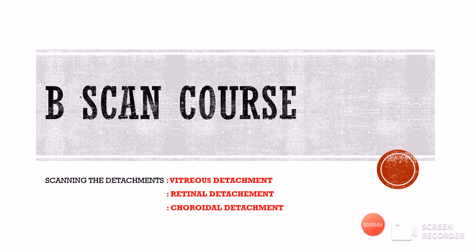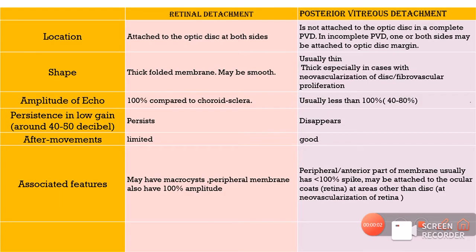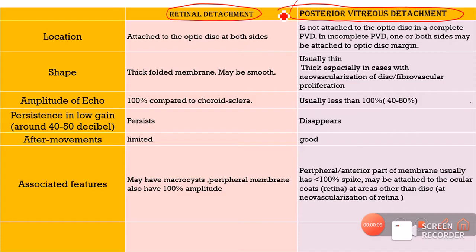Hello and welcome to Insight Ophthalmology. This is Dr. Amrit and you are watching the B-Scan course. Today we are studying how to scan the various types of detachments — vitreous detachment, retinal detachment, and choroidal detachment — and how to differentiate one from another. Let us first try to understand the basic differences between retinal detachment and posterior vitreous detachment, or PVD, on a B-Scan.